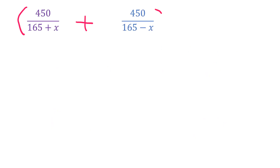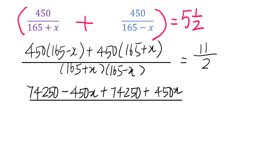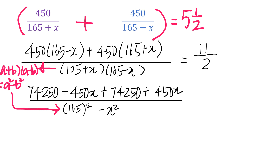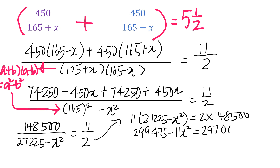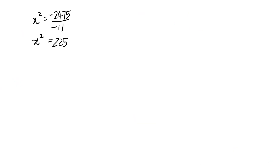The next step is to solve the fractional equation. We need to combine the two fractions into one single fraction on the left-hand side by finding the common denominator. From there, formulate the numerator. Change five and a half into an improper fraction. Simplify the numerator by expanding, and also expand the denominator by applying the algebraic identity (a + b)(a − b) = a² − b², giving 11 over 2. Simplify numerator and denominator, then cross-multiply. There's a lot of algebra involved so be very careful with the negatives and the algebraic manipulation. Finally, we end up getting x² equals 225.